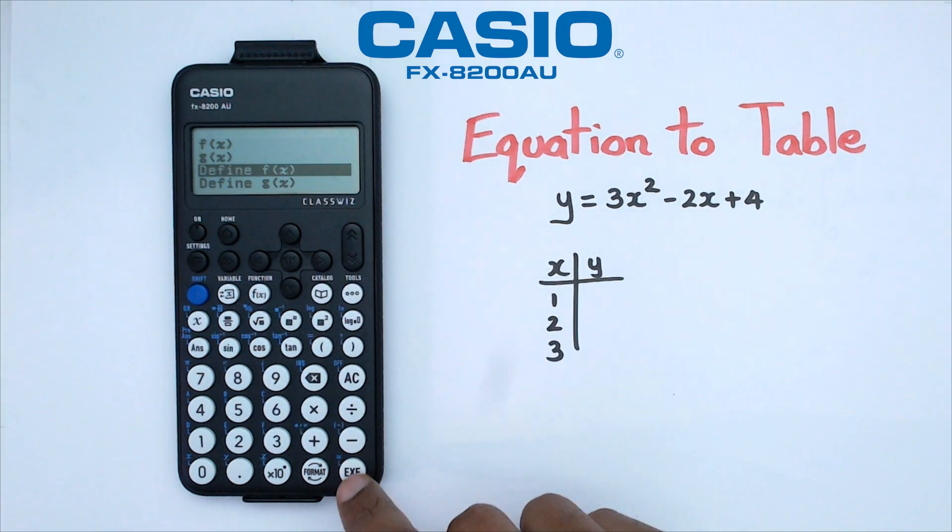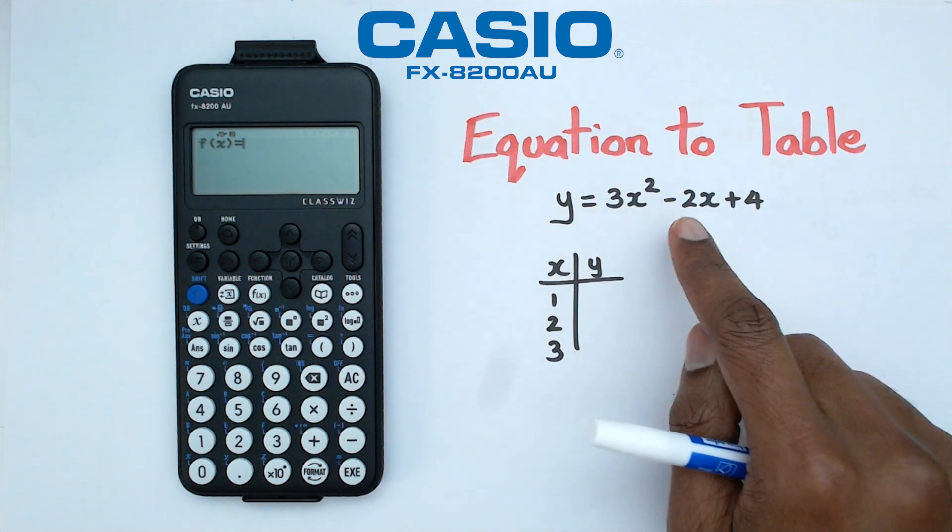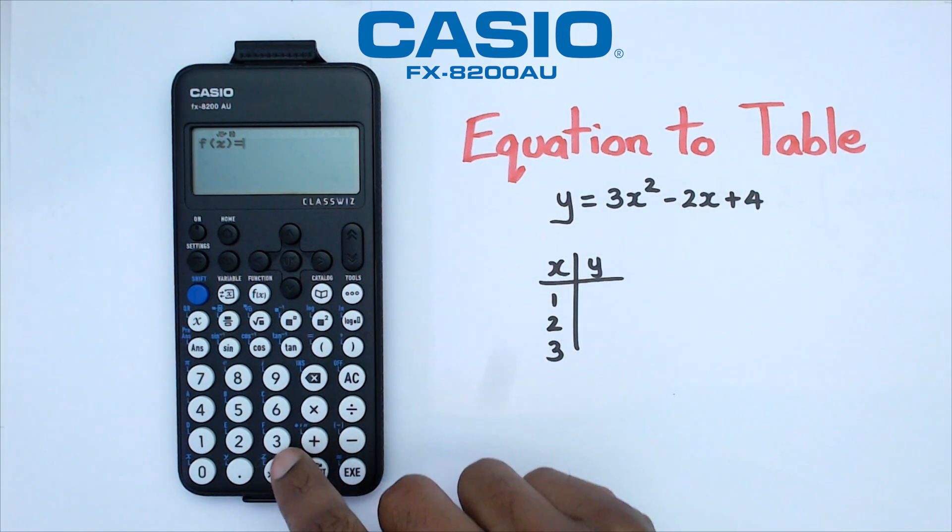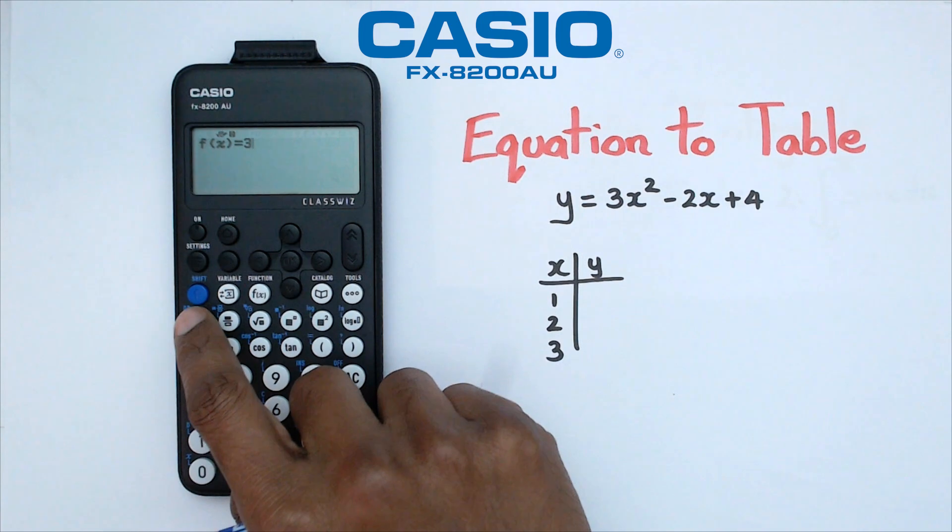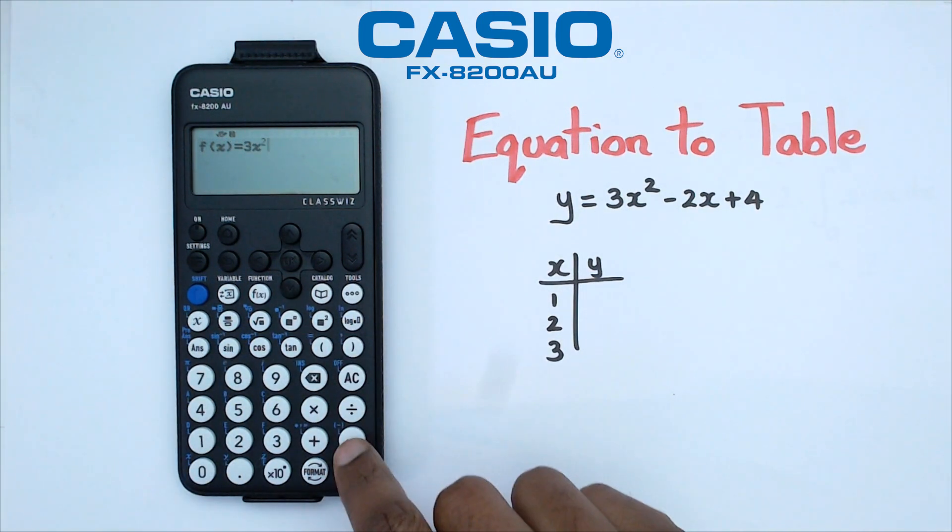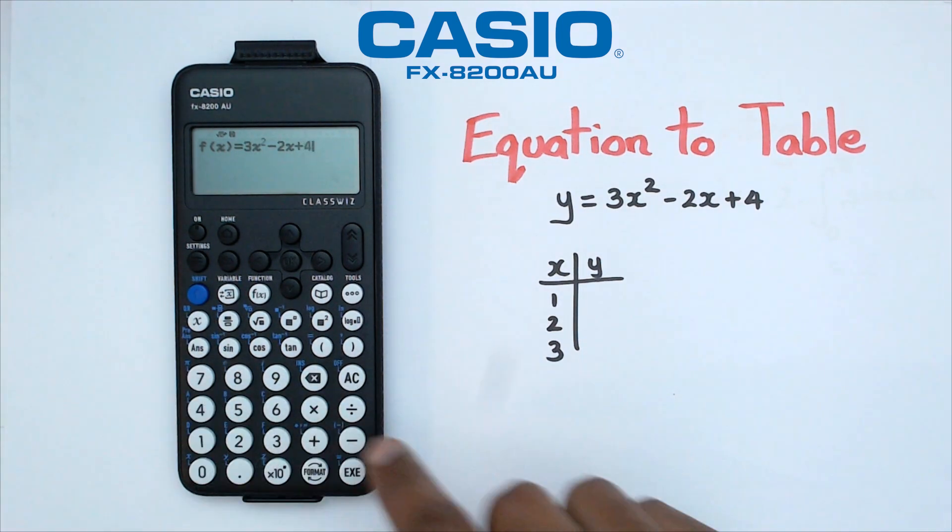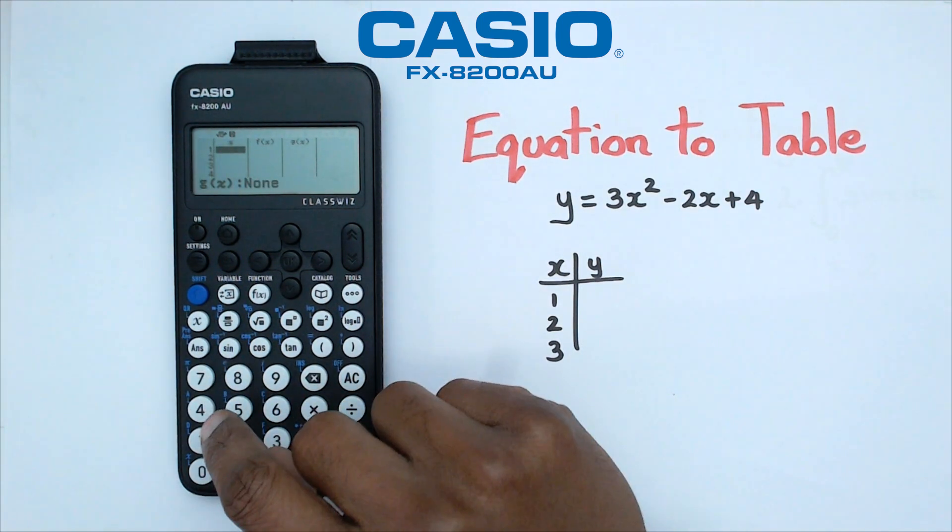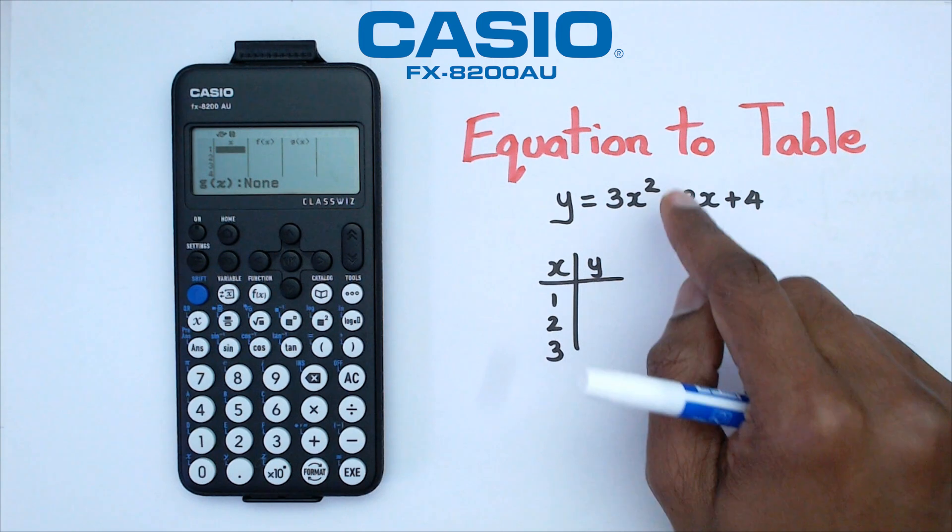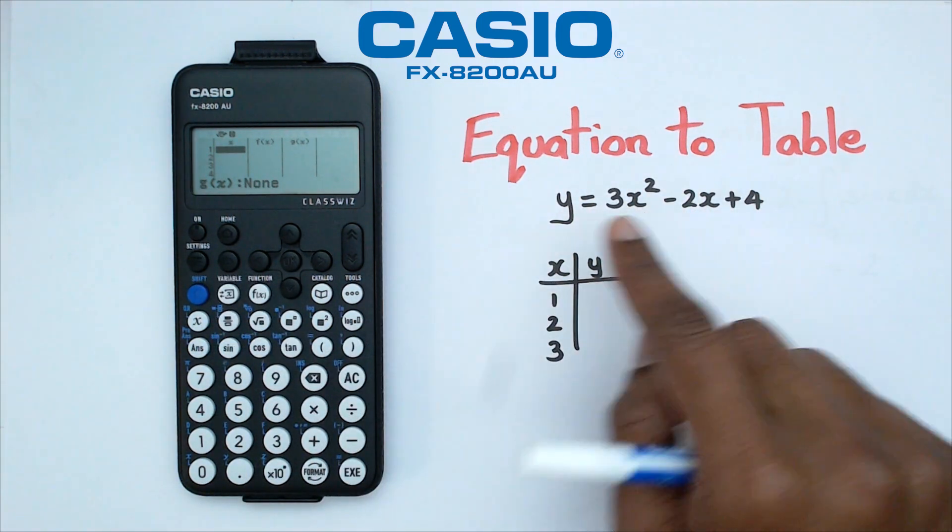So in here, we're going to click on exe, and for f(x), we're going to write in 3x squared minus 2x plus 4. And the way we're going to do that is click on 3, and for the x, we're going to use this x here, the squared, and then we've got minus 2x plus 4. Once we do this, what we've actually assigned is we've actually told the calculator that f(x) is equal to this.